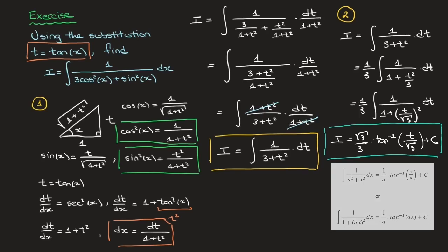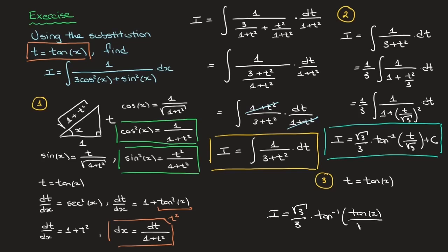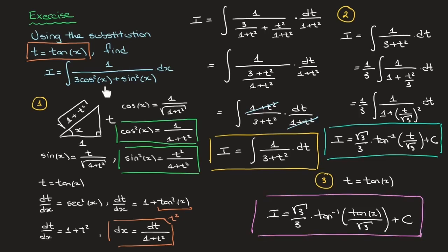We move on to the third and final step, in which we use the fact that t equals tan of x to write the result in terms of x. All we need to do is replace every t by tan of x. So the final answer is I equals square root of 3 over 3 times arctan of tan of x over the square root of 3, plus constant of integration c. We've integrated 1 over 3 cosine squared of x plus sine squared of x using the substitution t equals tan of x. That's it for this tutorial.